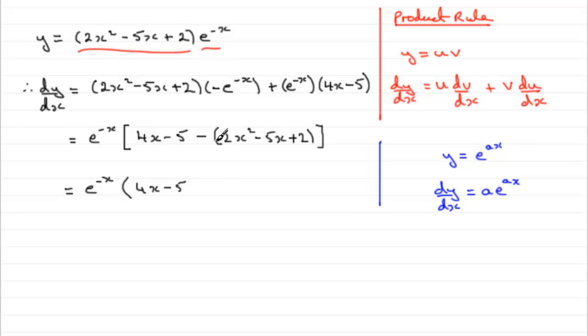We've got 4x minus 5, but this bracket then is being multiplied by minus 1. So that's going to give us minus 2x squared plus 5x, and then minus 2.